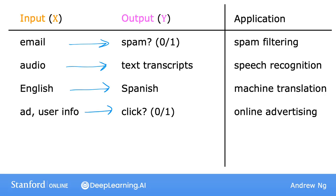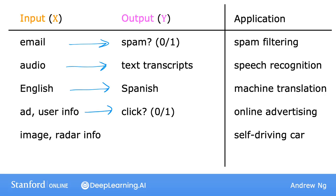Or if you want to build a self-driving car, the learning algorithm would take as input an image and some information from other sensors, such as radar, and then try to output the position of other cars so that your self-driving car can safely drive around them.